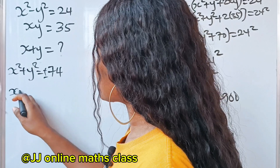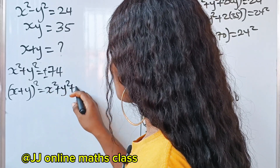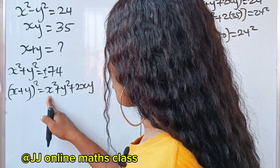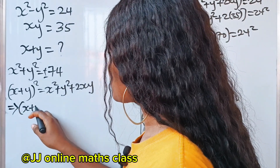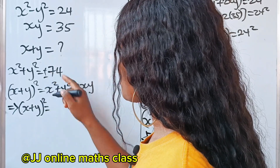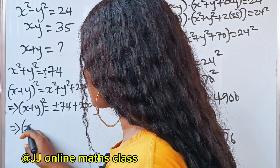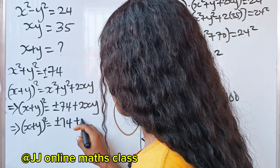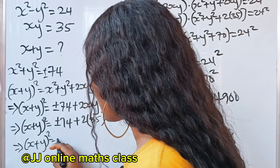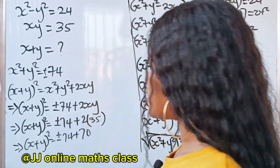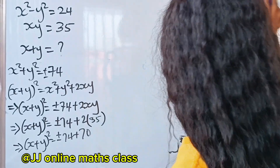Now, x plus y, all squared, equals x squared plus y squared plus 2xy. We have x squared plus y squared as plus or minus 74, and xy is 35. So x plus y squared equals plus or minus 74 plus 2 times 35, which is plus or minus 74 plus 70. That gives us two cases.